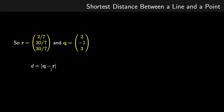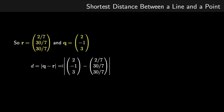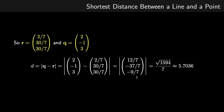We calculate Q minus R to get a vector, and the magnitude is found by squaring each component, adding them all up, then taking the square root. In this case we get the square root of 1594 divided by seven, which is approximately 5.7. So that's the shortest distance between a point and a line.